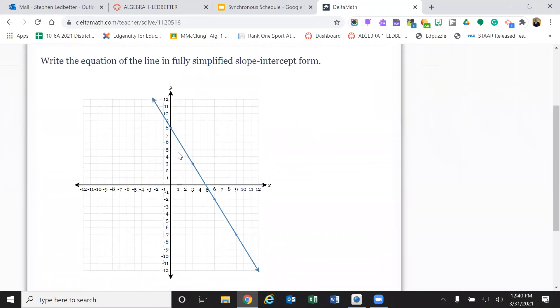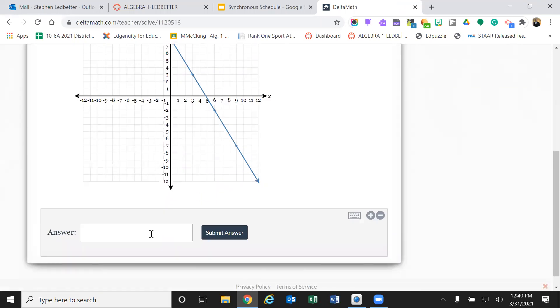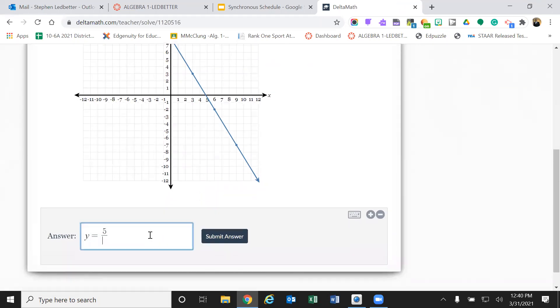All right. So my slope, I'm going to use these dots because they're the big ones. So I'm going to go here. I'm going to go one, two, three, four, five, then one, two, three. So my slope is five over three.